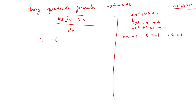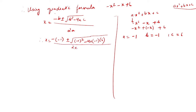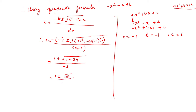Therefore, your minus b is going to be minus of minus 1, plus or minus. Your b squared is going to be minus 1 squared — this is to find the value of x. Minus 4 into a is minus 1, c is 6 — put under bracket — and then 2 into minus 1. Making the necessary changes: minus into minus become plus, minus 1 squared becomes 1, minus into minus becomes plus. So plus 4 into 6 becomes 24 divided by minus 2. You have 1 plus or minus root of 25 by minus 2.